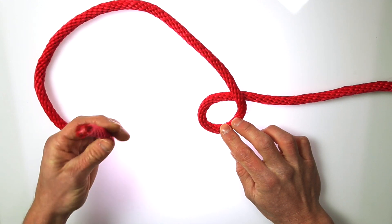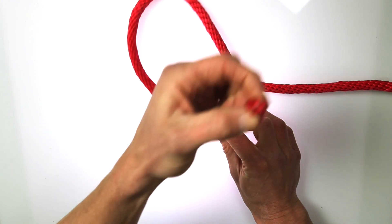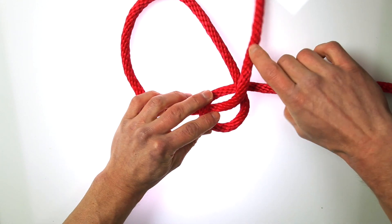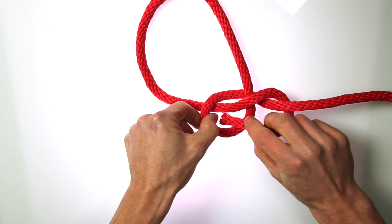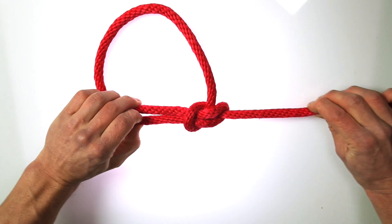The rabbit, this loose end, goes through the hole around the tree, which is this end of the rope right here, and then back into the hole again. Tighten that, and you've got your bowline knot.